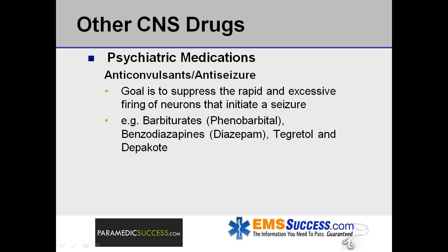Anticonvulsants and anti-seizures. The goal of anticonvulsants, often referred to as anti-seizures, is to suppress the rapid and excessive firing of neurons that initiate the seizure. Medications used to treat seizures include barbiturates such as phenobarbital, benzodiazepines such as diazepam, and others such as Tegretol and Depakote.